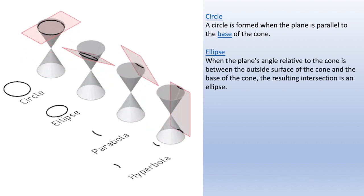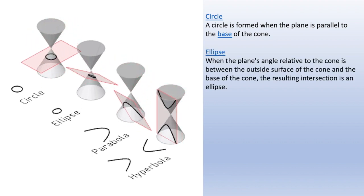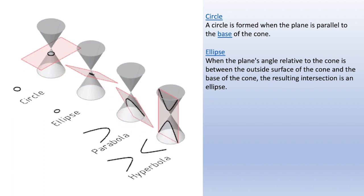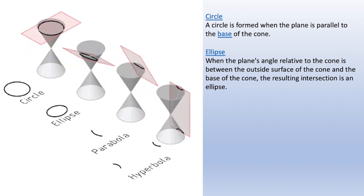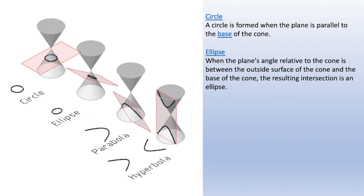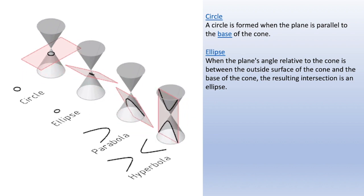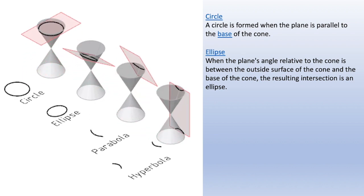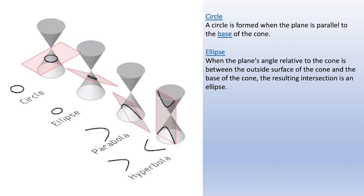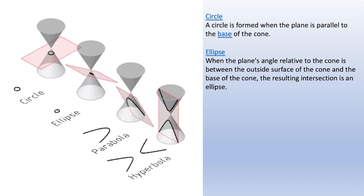The second one is an ellipse. When the plane's angle relative to the cone is between the outside surface of the cone and the base of the cone, the resulting intersection is an ellipse. Also, a circle is a special type of ellipse.